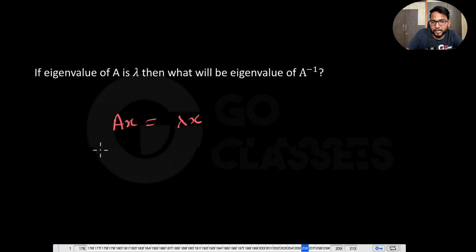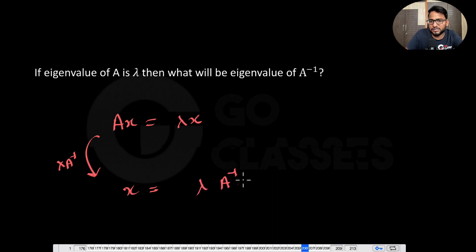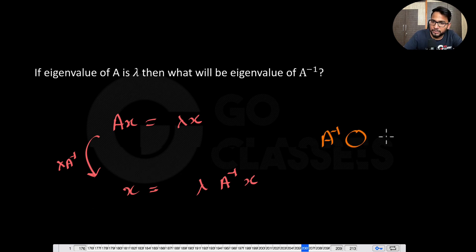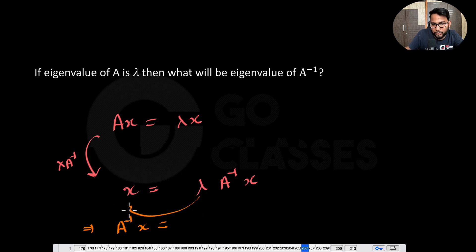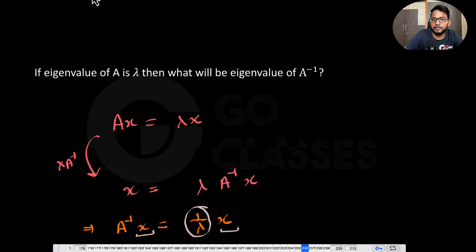For A inverse: given Ax = λx, multiply both sides by A inverse. You get x = λ(A⁻¹x), so A⁻¹x = (1/λ)x. From this equation, x is the eigenvector and the corresponding eigenvalue of A inverse is 1/λ.